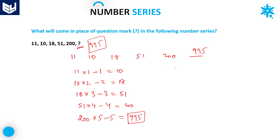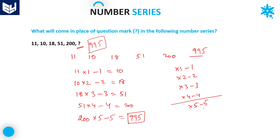The logic it is following is: ×1−1, ×2−2, ×3−3, ×4−4, and at last ×5−5. See: 200 × 5 = 1000, 1000 − 5 = 995. Therefore, in place of the question mark, 995 should be there.